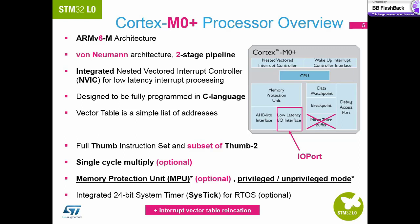As the STM32L0 is a small device, the microtrace buffer will use up too many pins on the device. The Cortex M0+ core is a von Neumann architecture with a two stage pipeline, and can handle a mix of 16 and 32 bit instructions.